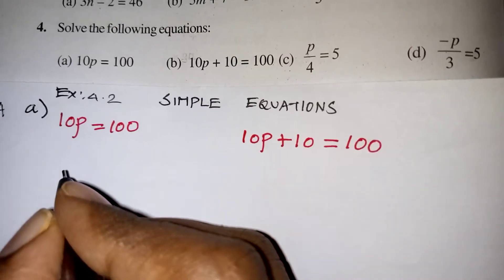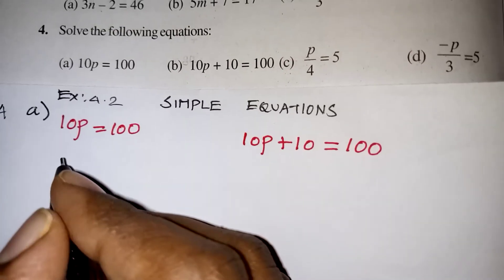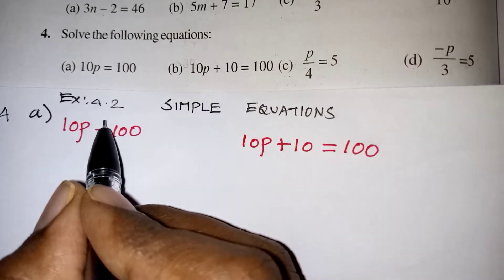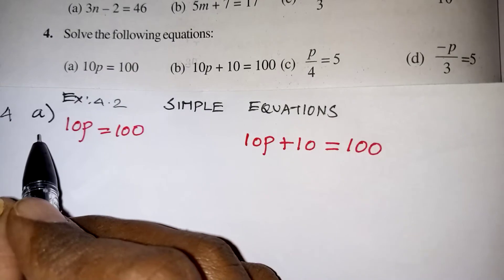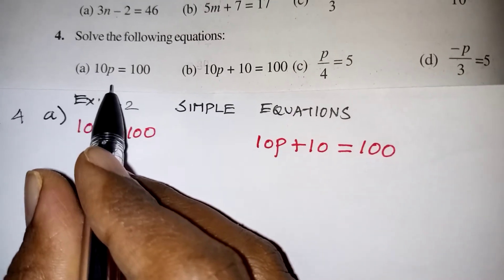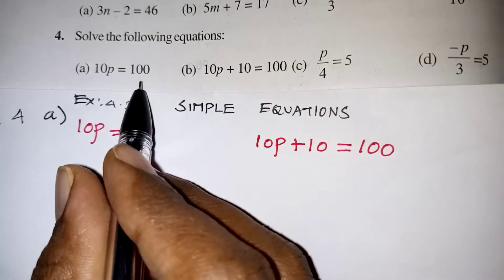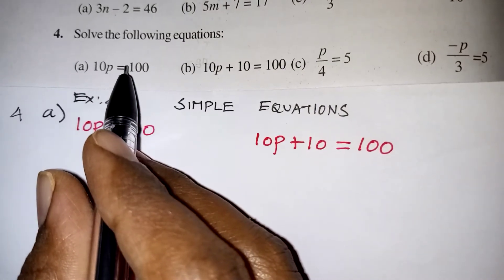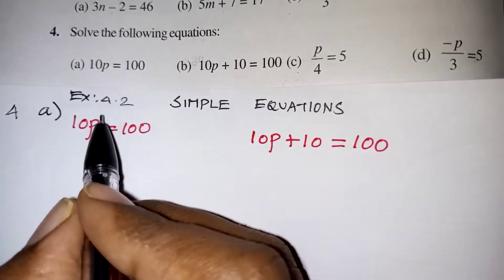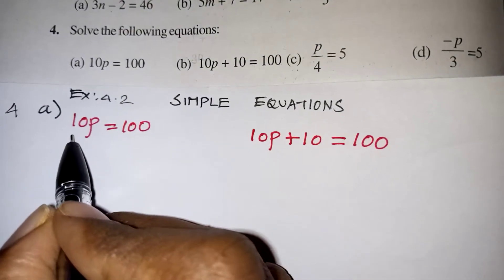Hi students, in this video we are going to learn exercise number 4.2, question number 4, our first problem: 10p is equal to 100. We are going to solve the equation, so we need to solve for the variable.